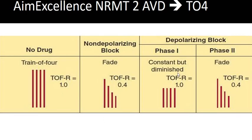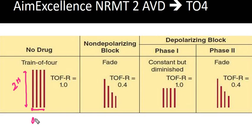Here we are seeing the train-of-four phenomenon being elicited. In normal cases where no neuromuscular block is given, all the amplitudes are going to be equal — there is no depression of amplitude. The stimulus is 2 Hz, given over a 2-second period, so the gap between each of the four stimuli is roughly 0.5 seconds, and the duration of each stimulus is 200 milliseconds.